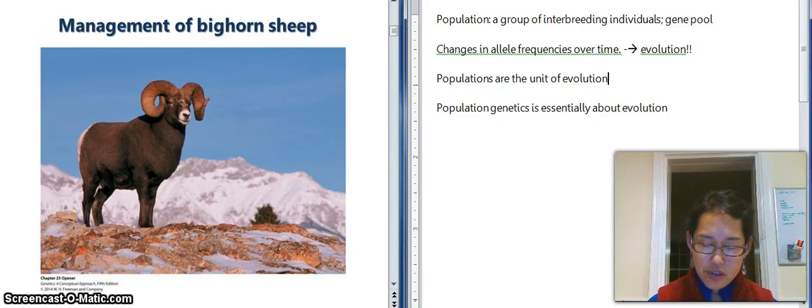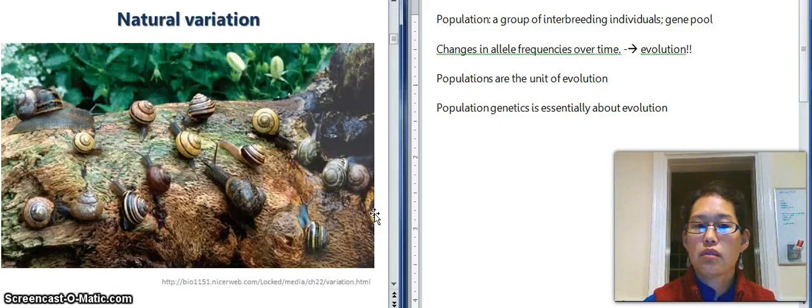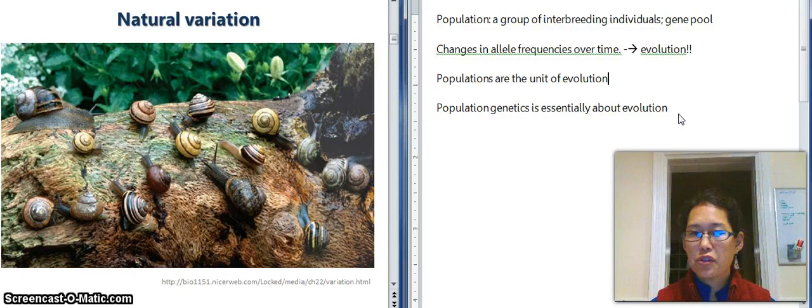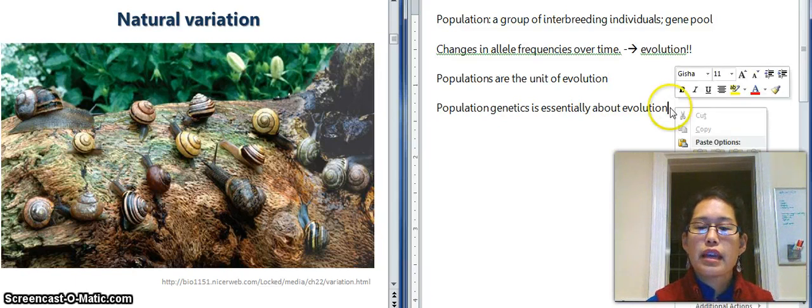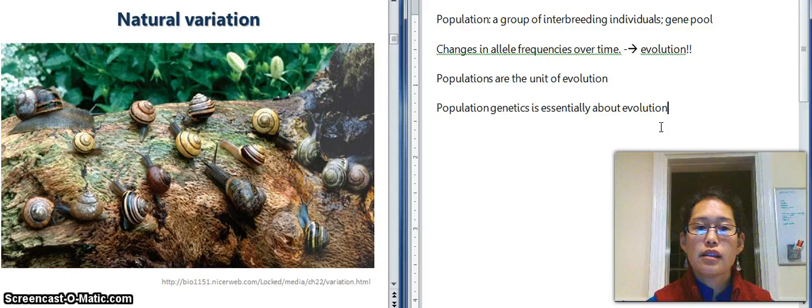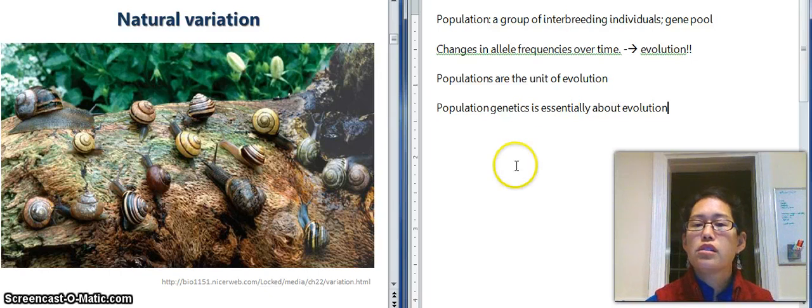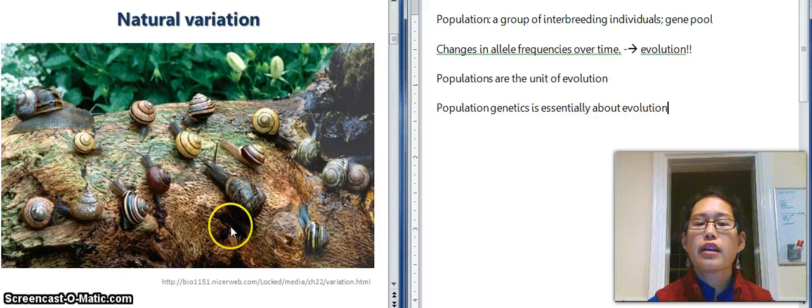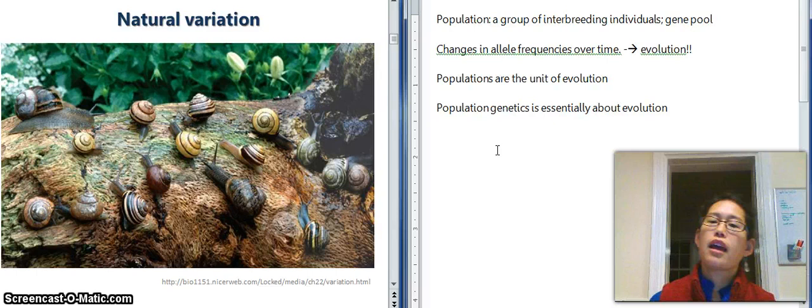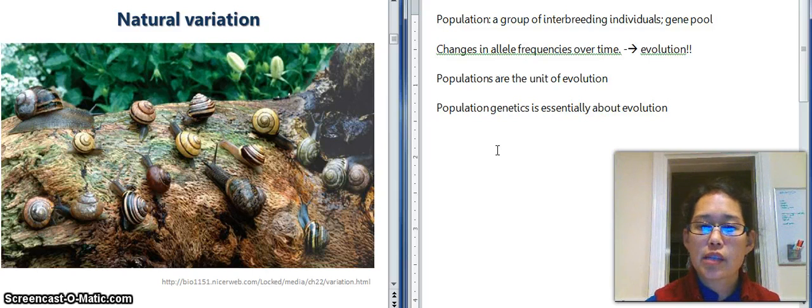Okay, so it is also about understanding natural variation within populations. And variation, genetic variation, phenotypic variation is essential for evolution to happen. So we take this natural variation and we try to understand how it changes over time and what are the forces that are driving that change. So that's what population genetics is about.